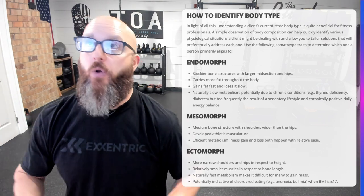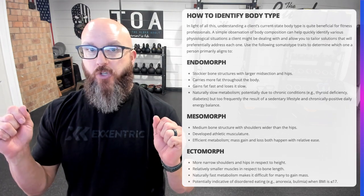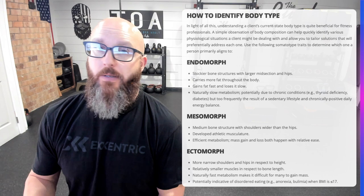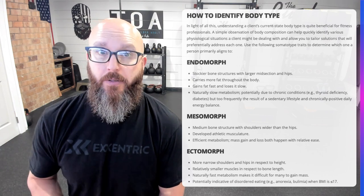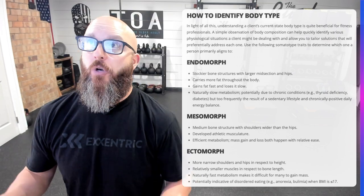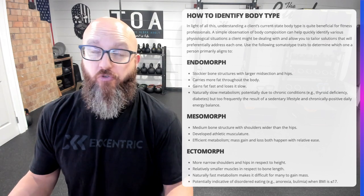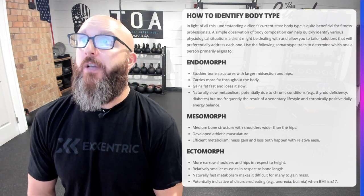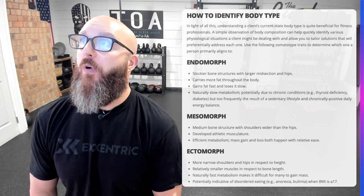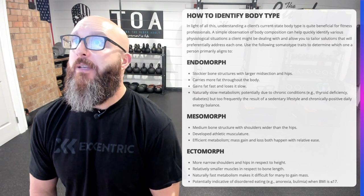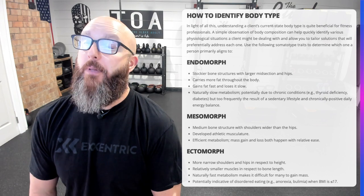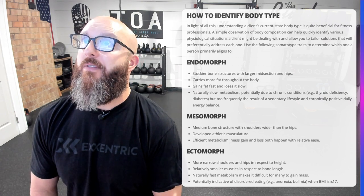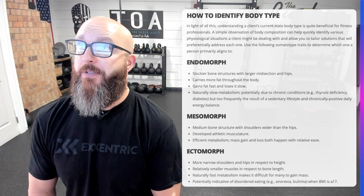The endomorph — that's me, or at least that's what people say when they look at those three. Stockier bone structure with a large midsection and hips: I carry more belly fat than anywhere else, but I don't actually have a large midsection or hips, and I'm not stocky. Carries more fat throughout the body — yes. Gains fat fast, loses it slowly — yes, that one is accurate. Naturally slow metabolism due to potential chronic conditions like thyroid deficiency or diabetes — my metabolism is moderate. I don't have diabetes, but my entire family does, so it'll probably be a struggle at some point.